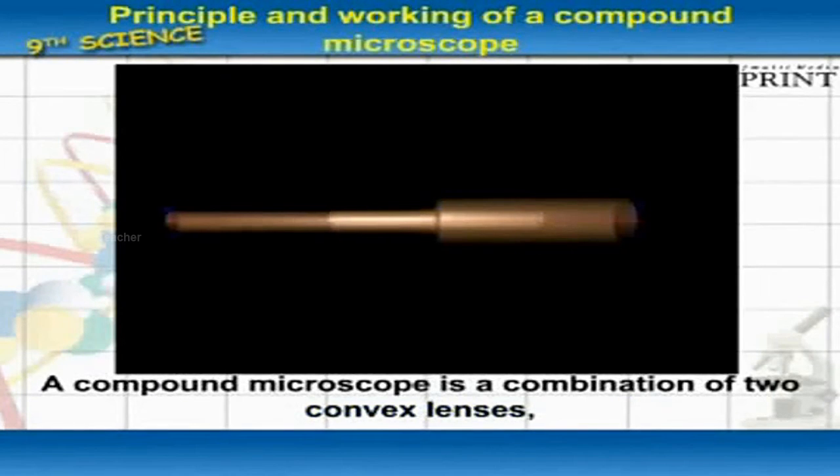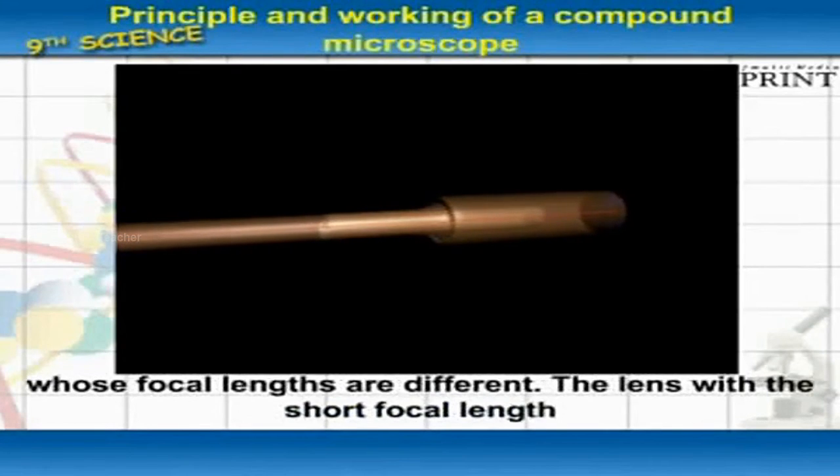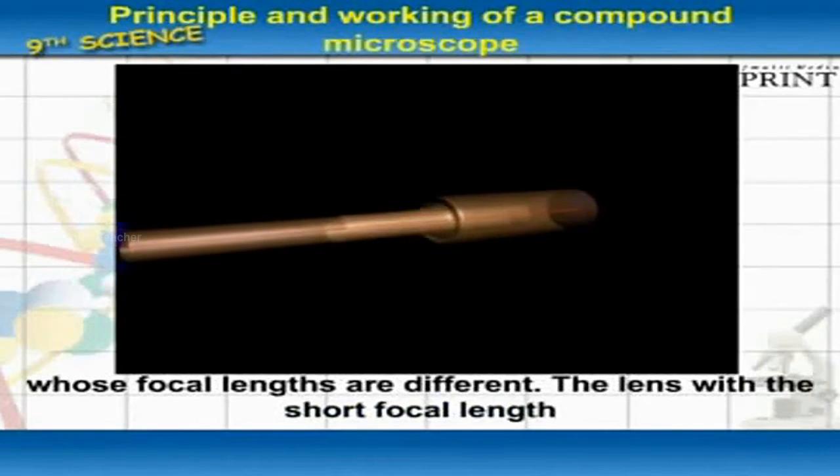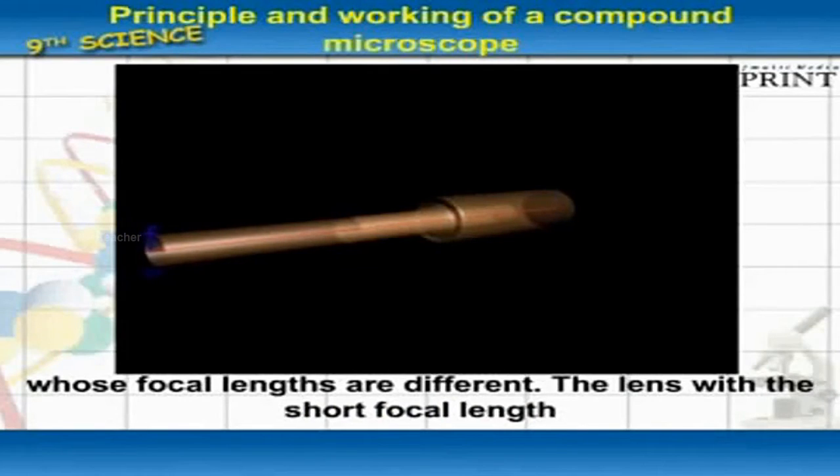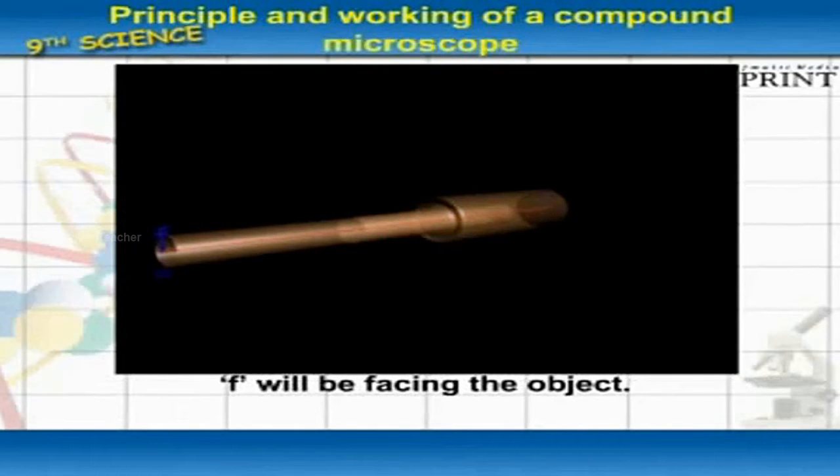A compound microscope is a combination of two convex lenses whose focal lengths are different. The lens with a short focal length F will be facing the object.